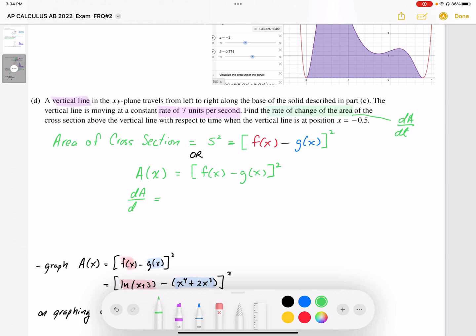So I'm going to find dA by dt by first of all, finding dA by dx, which I can do by differentiating that expression. And then I can generate the part that I want, dx by dt, which is already known.